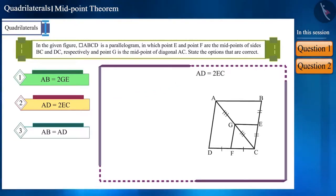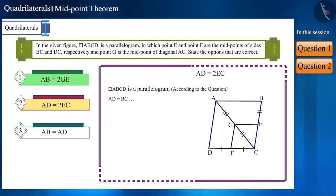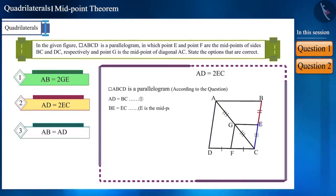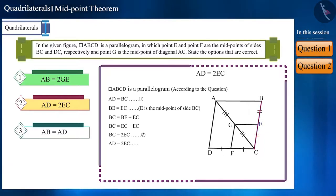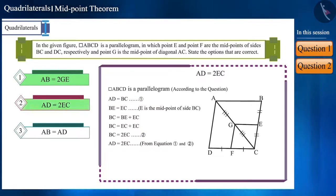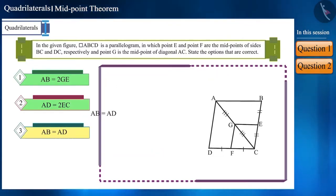Now for the second option: ABCD is a parallelogram, so sides AD and BC are equal. Point E is the midpoint of side BC, therefore BE equals EC. We can write BC in terms of EC and substitute EC in place of BE. We get AD equal to 2EC — the second option is also correct.